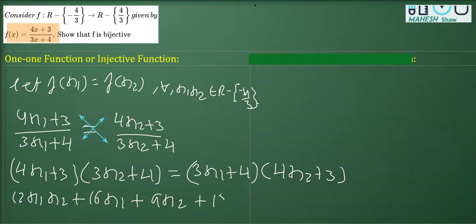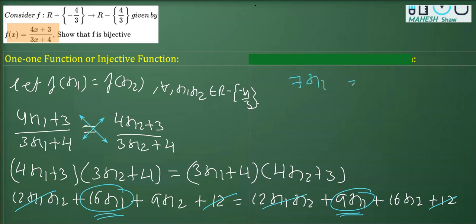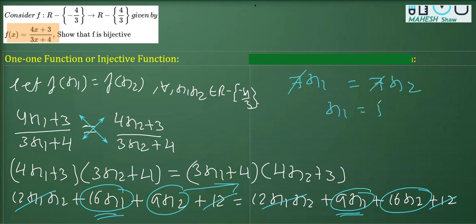On the right-hand side: 12x₁x₂ + 9x₁ + 16x₂ + 12. The 12x₁x₂ terms cancel and the 12s cancel. Keeping like terms together: 16x₁ − 9x₁ = 16x₂ − 9x₂, which gives 7x₁ = 7x₂. The 7s cancel, so x₁ = x₂. Hence the function is one-one.